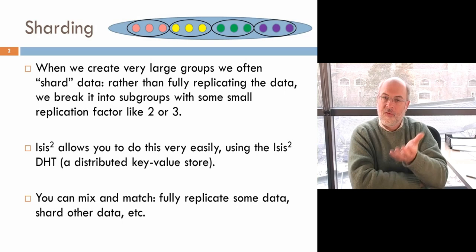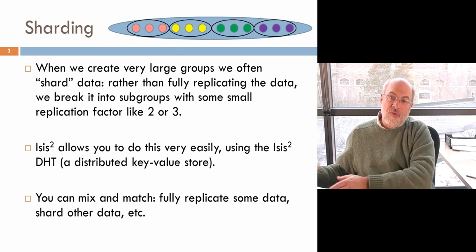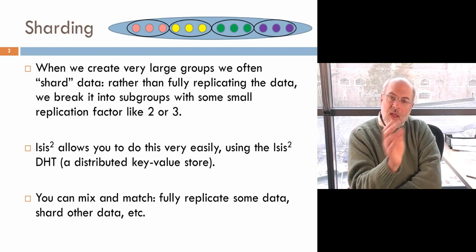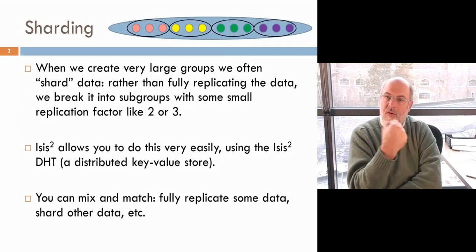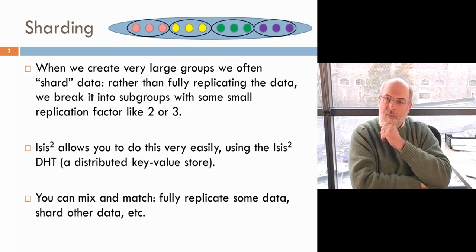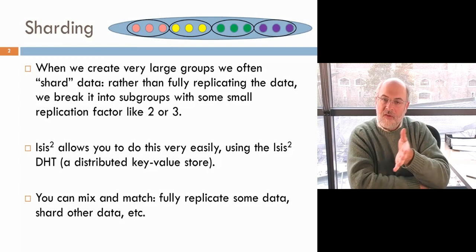The sharded data could be the actual representation used for services, or it could be a snapshot of some underlying system. Either way, what we think about here are key-value stores — each item has a name, its key, and the keys are used to decide which shard to put the item into. When the system is asked to save a piece of data, we replicate it onto the corresponding shard: take the key, map it to the shard, then replicate within the shard.